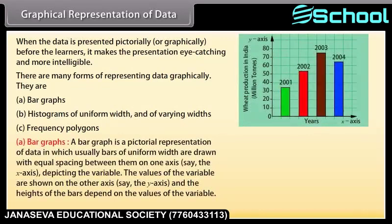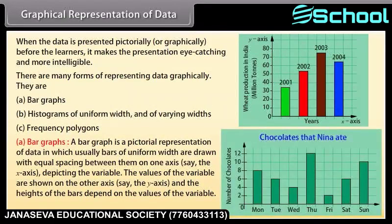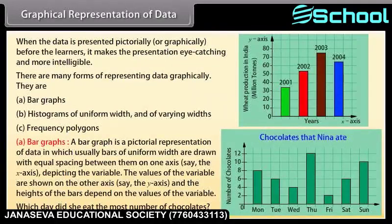A bar graph is a pictorial representation of data in which bars of uniform width are drawn with equal spacing between them on one axis — say the x-axis — depicting the variable. The values of the variable are shown on the other axis, the y-axis, and the heights of the bars depend on the values of the variable. For example, this bar graph represents the number of chocolates that Neena ate last week. We can see that on Thursday she ate the most number of chocolates.